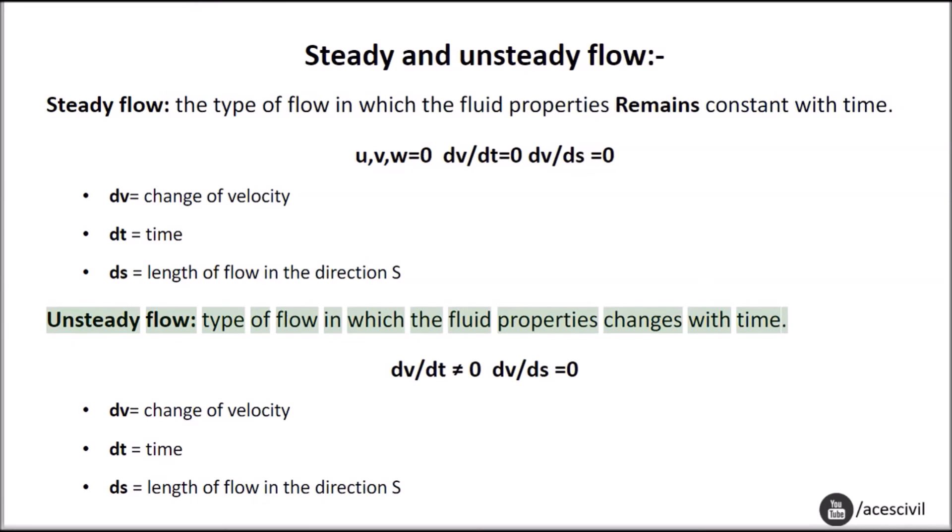Unsteady flow is a type of flow in which the fluid properties change with time. dv/dt ≠ 0, dp/ds = 0, where dv = change of velocity, dt = time, ds = length of flow in the direction s.